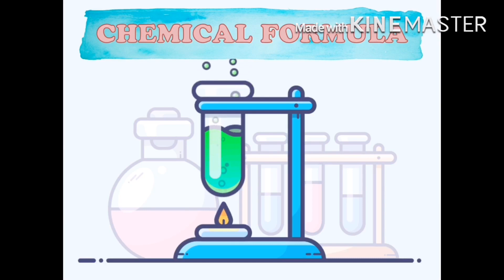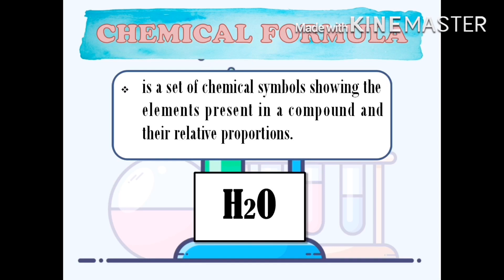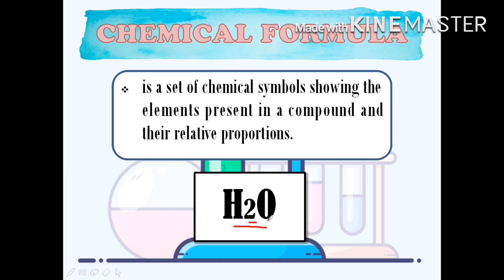Now let us define what a chemical formula is. A chemical formula is a set of symbols showing the elements present in a compound and their relative proportions. Let us take the chemical formula of water as an example: H₂O. This formula means that each molecule of water contains two hydrogen atoms and one oxygen atom. The subscript 2 shows there are two atoms of hydrogen, and O for oxygen has no subscript — meaning there is only one atom present.